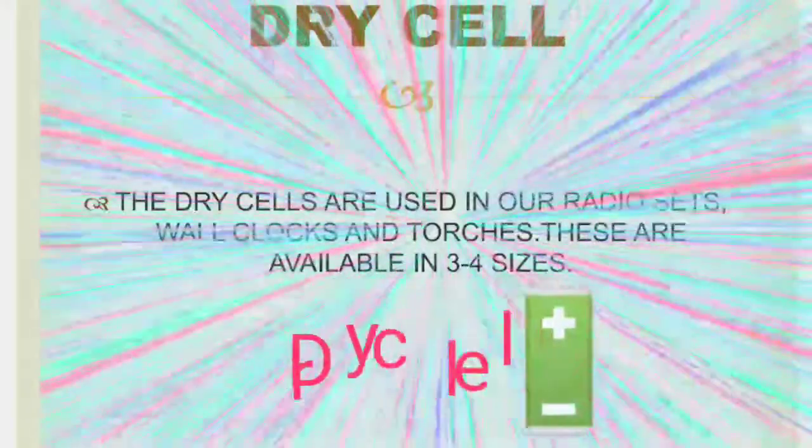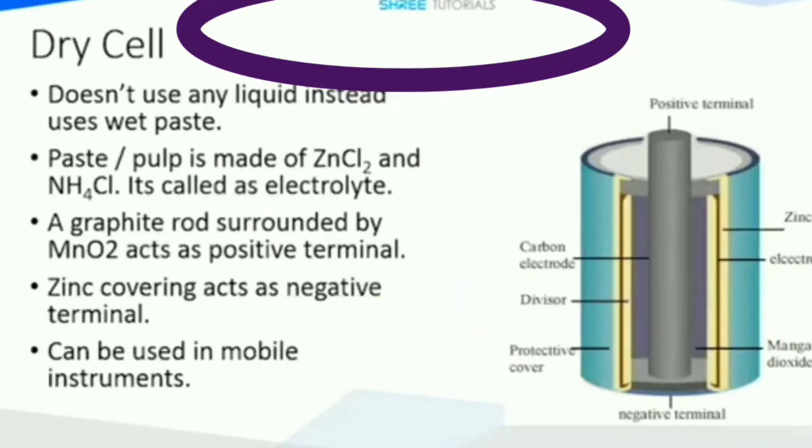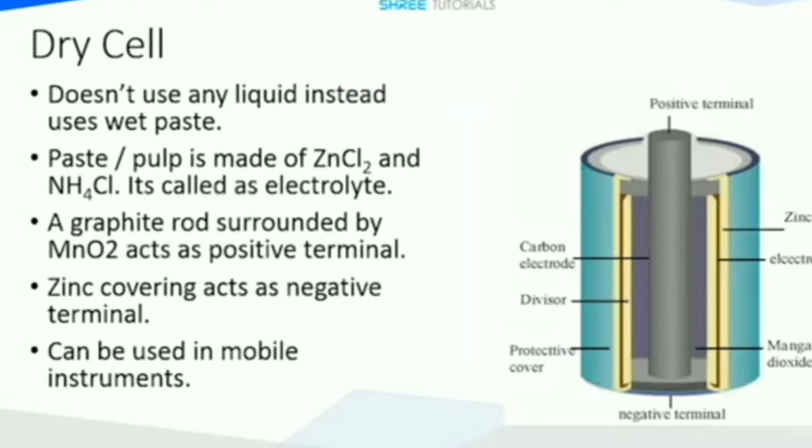Let us see dry cell. The dry cells are used in our radio sets, wall clocks and torches. These are available in 3 to 4 sizes. Now we will try this. Take a used dry cell and remove its outer coating. Inside you will find a whitish metal layer. This is the zinc metal layer. This is the negative terminal of the cell.